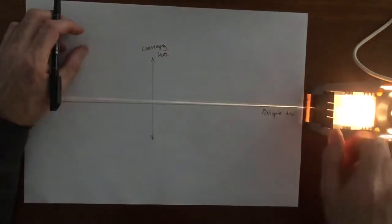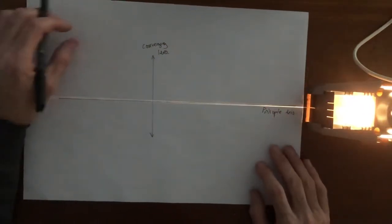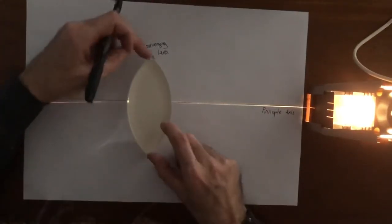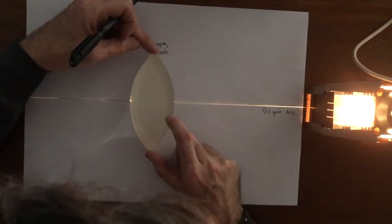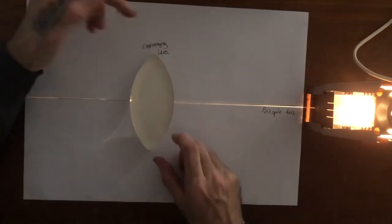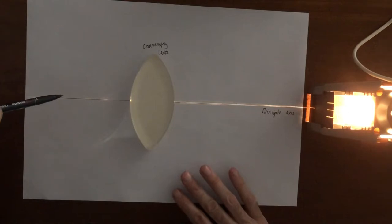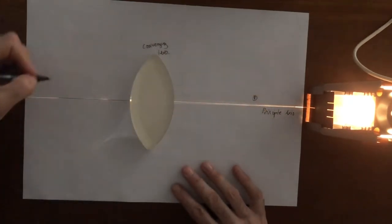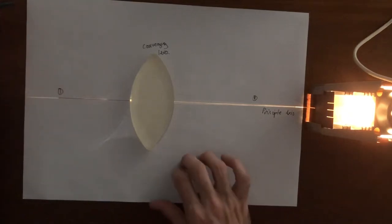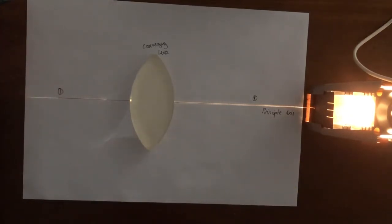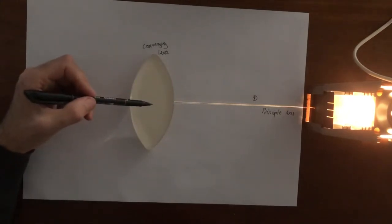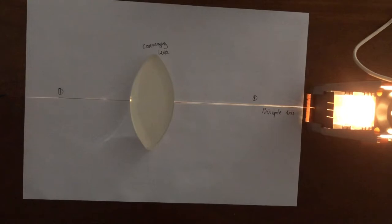I'm going to use one ray here and shine it along the principal axis, placing the converging lens over that point. So now you can see a ray coming in along the principal axis — this is ray one. It actually comes out along the principal axis. Any ray traveling through the geometrical center of the lens along the principal axis will carry on undeviated.